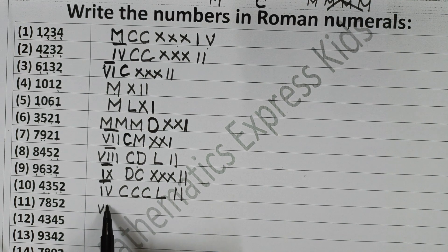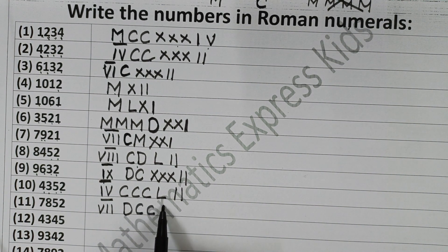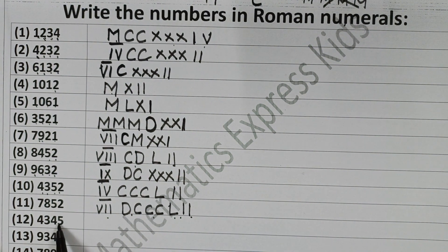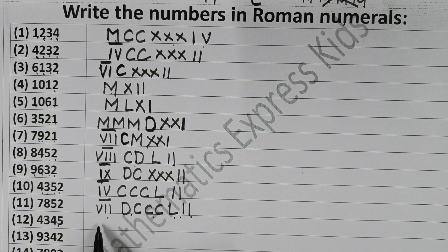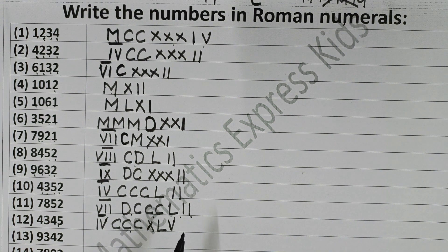Now 7852. For 7000, write VII with a bar. For 800: write 500, then add 300 — DCCC — that is 800. Then 50 is L and 2 is II. Now 4345: for 4000, write IV with a bar. Then 300 is CCC. For 40: write 50 and subtract 10 from it — XL — that is 40. Then 5 is V. So 4345 is IV-bar CCCXLV.